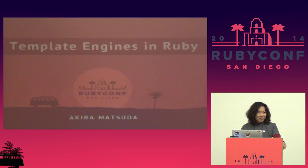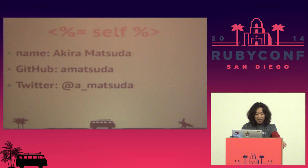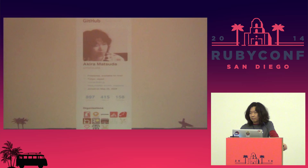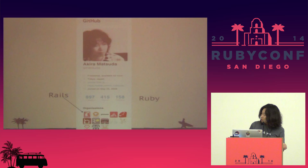Hello everybody. I'm Akira from Japan. I'm matsuda on GitHub and @matsuda on Twitter. I'm on the Rails team, and I'm a Ruby committer. I'm also a Haml committer, and that is why I'm talking about template engines.